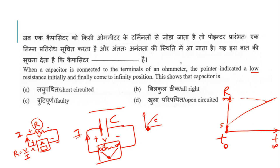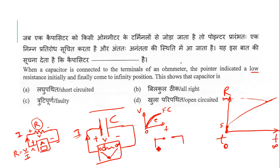As the charge builds exponentially, the voltage increases with respect to time. At time zero it is a short circuit, and as time passes, the capacitor fully charges and acts as an open circuit. So the pointer indicates low resistance initially and finally comes to the open or infinite resistance position — this shows the capacitor is in good condition.